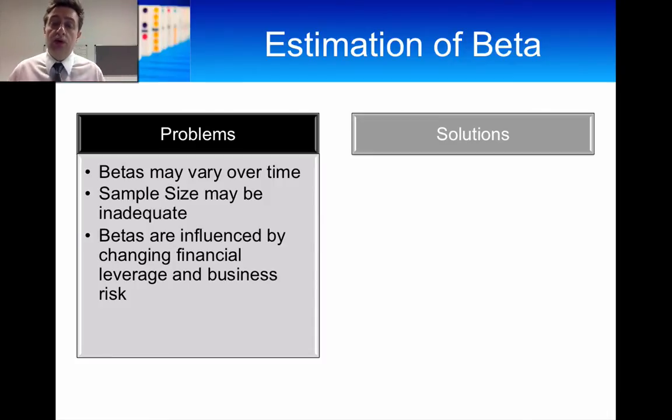You might then argue, well, you should maybe use less observations. So let's say two years of monthly data. Two years of monthly data gives you 24 observations. But then the sample size is very small, and you then lack power in your ordinary least squares regression.